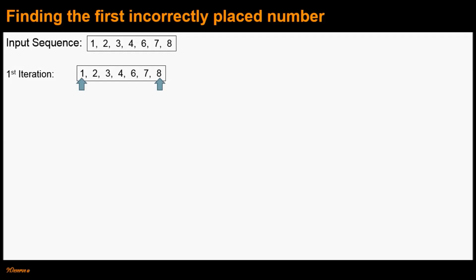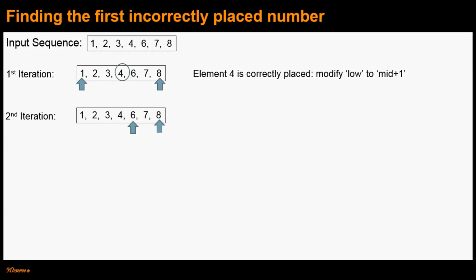Here, the low index points to element 1 and the high index points to element 8. The mid element in this case would be element 4. We check if element 4 is correctly placed — and it is. Therefore, the first incorrectly placed number must be in the right half of element 4. To continue searching the right half, we modify the low index to mid plus 1. That leads to our second iteration, where the low index points to element 6 and the high index points to element 8.